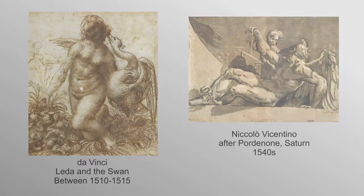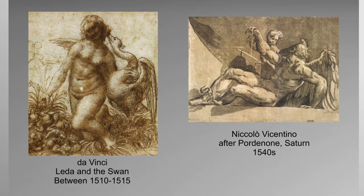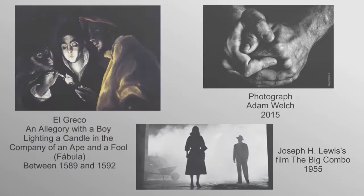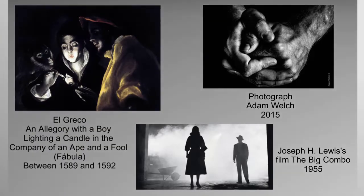For instance, Chiaroscuro can be found in different kinds of art forms that include drawing, woodcuts, painting, photography, and in cinema.